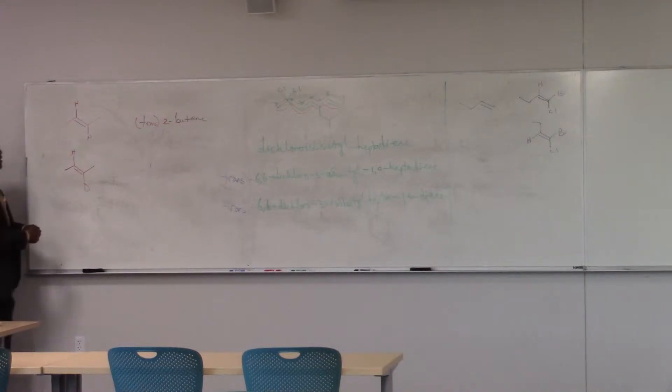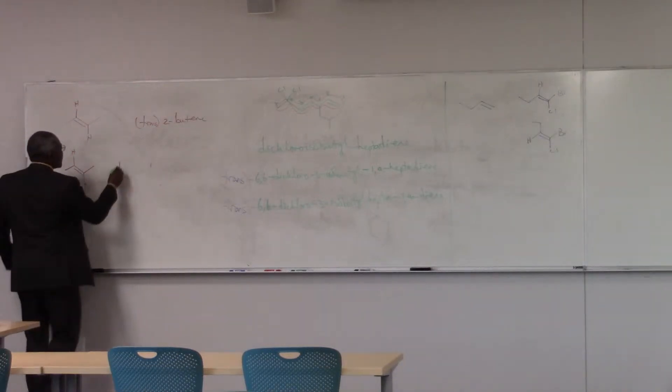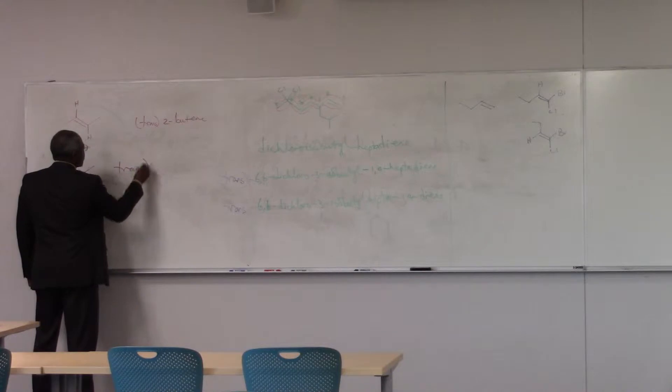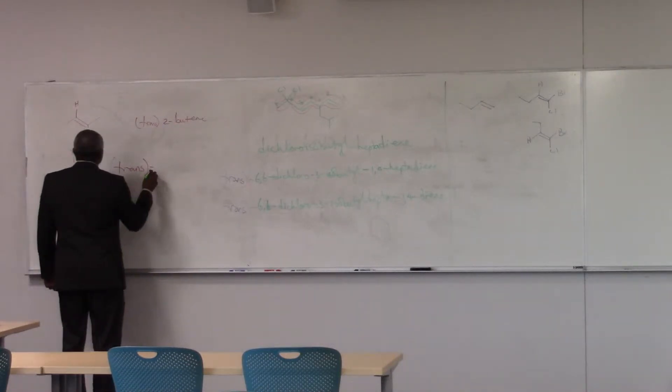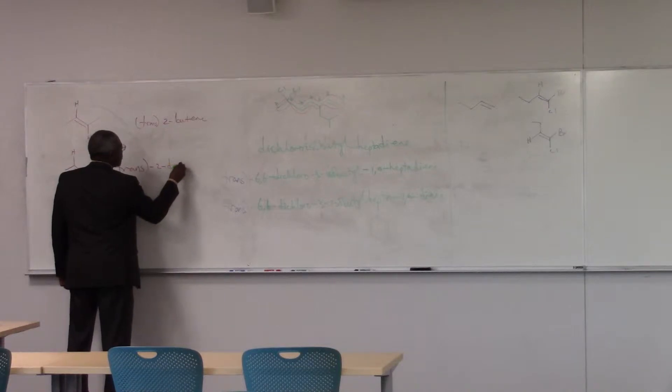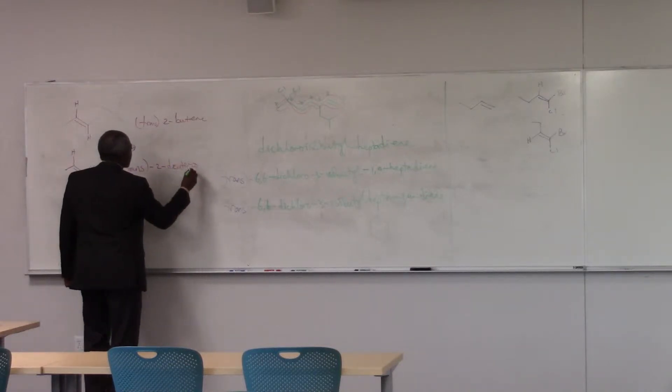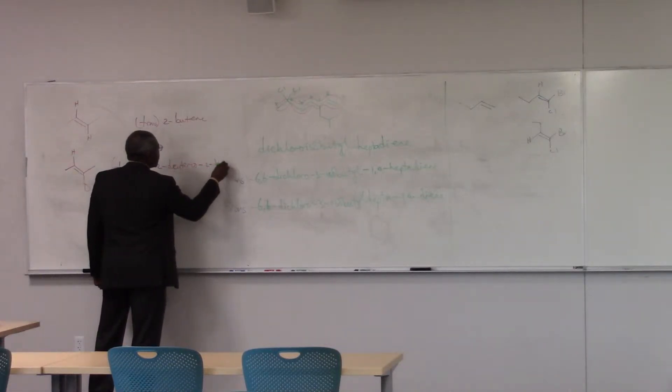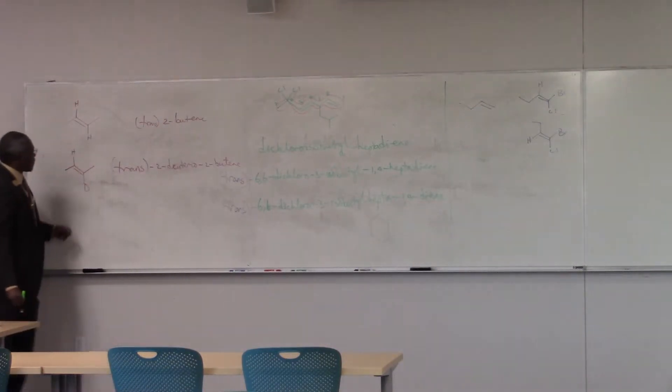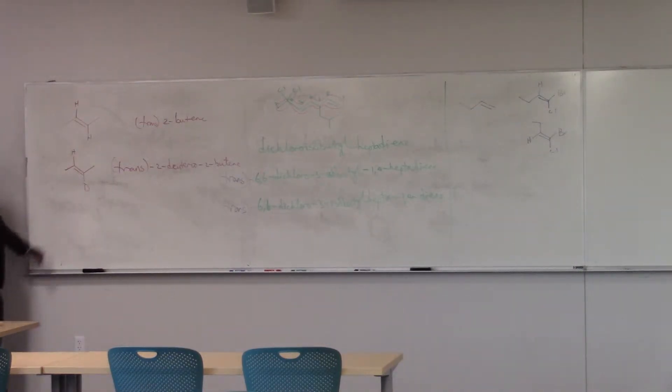And what would I call this? Because I would call this trans-2-deuterio-2-butene. Alright? So, it's a trans compound. I've got the double bond, I've got carbon number 2, and I've got my deuterium at carbon number 2. So it's trans-2-deuterio, right? 2-deuterio.